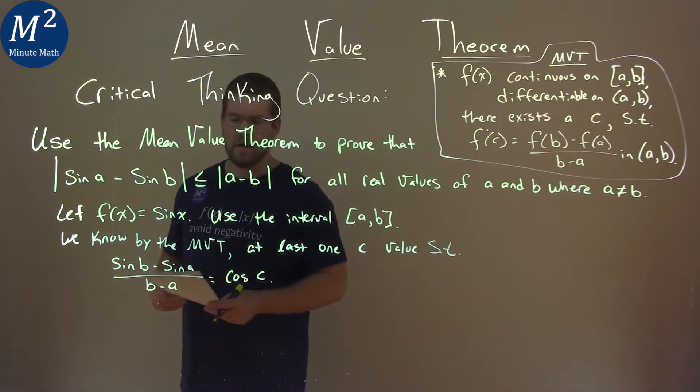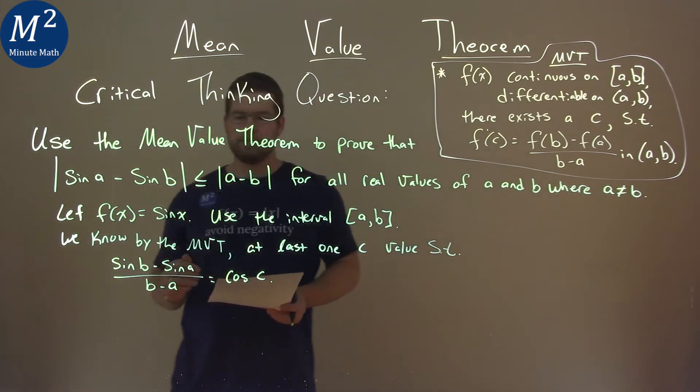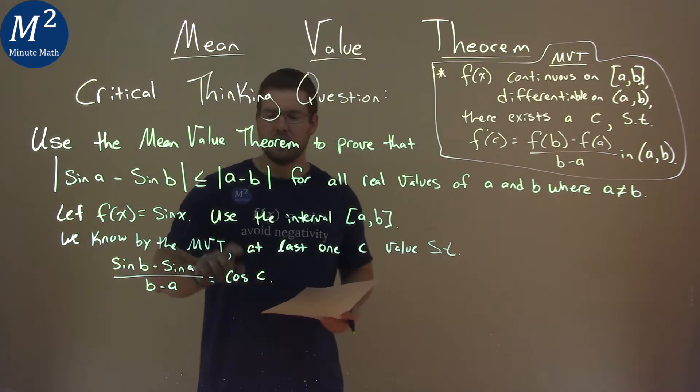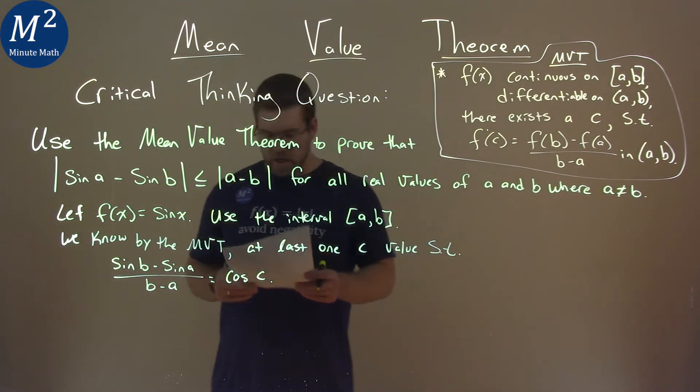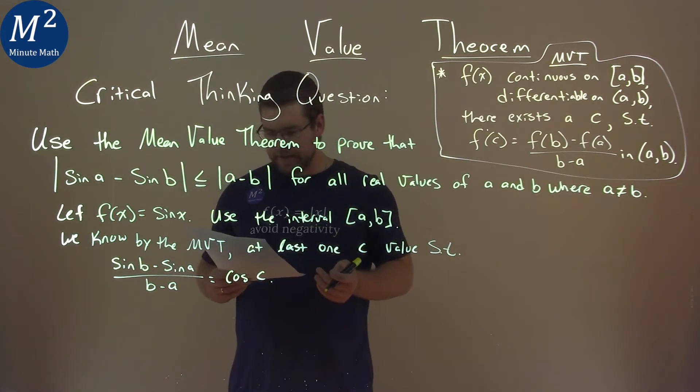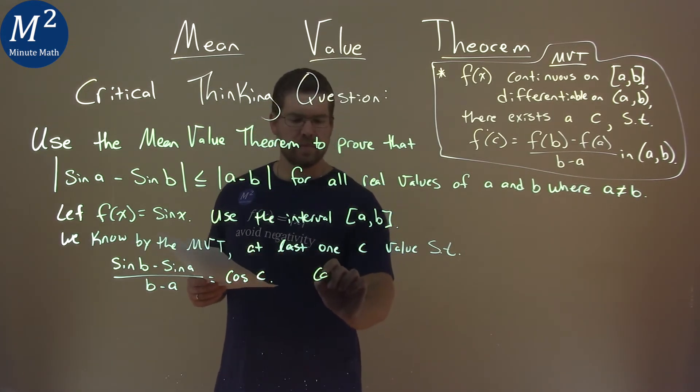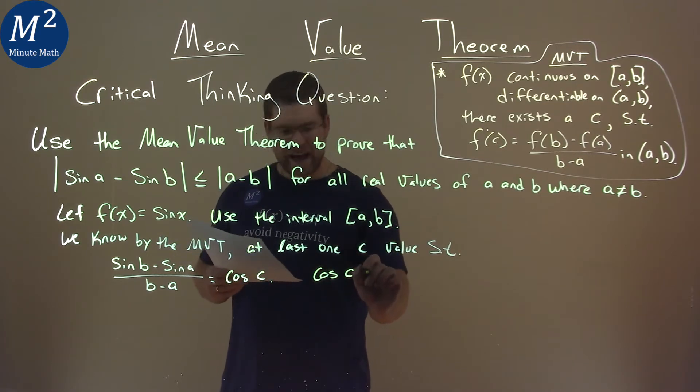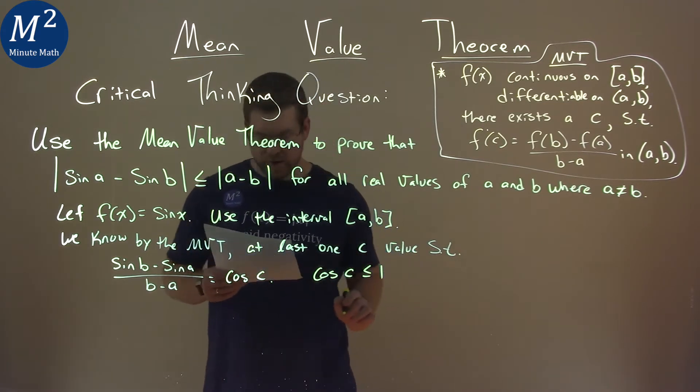Okay, so we have that written out using the Mean Value Theorem. The derivative of sine is cosine, and we're finding it at C. Now, what do we know about cosine of C? Well, we know the cosine of C has to be less than or equal to 1 for all C.